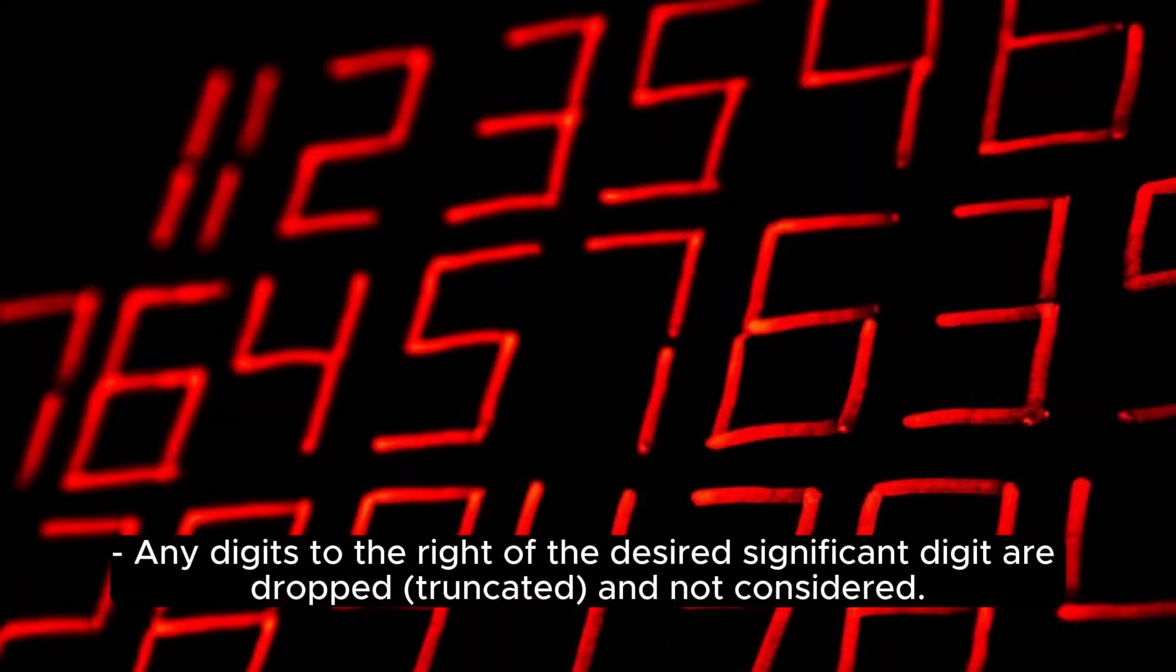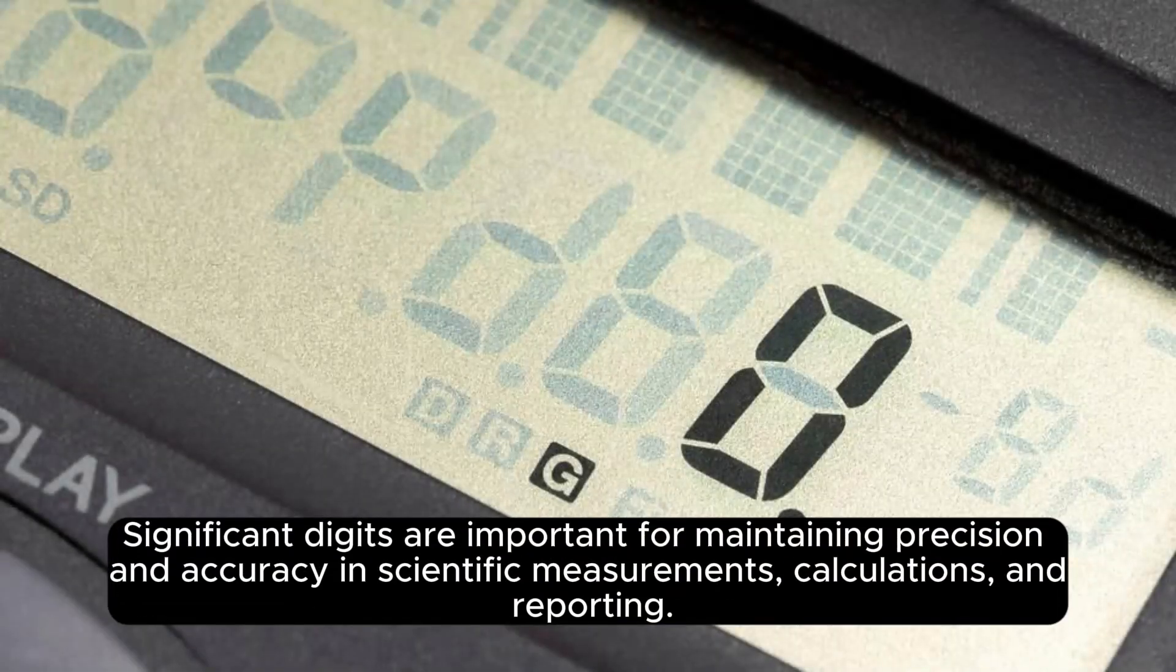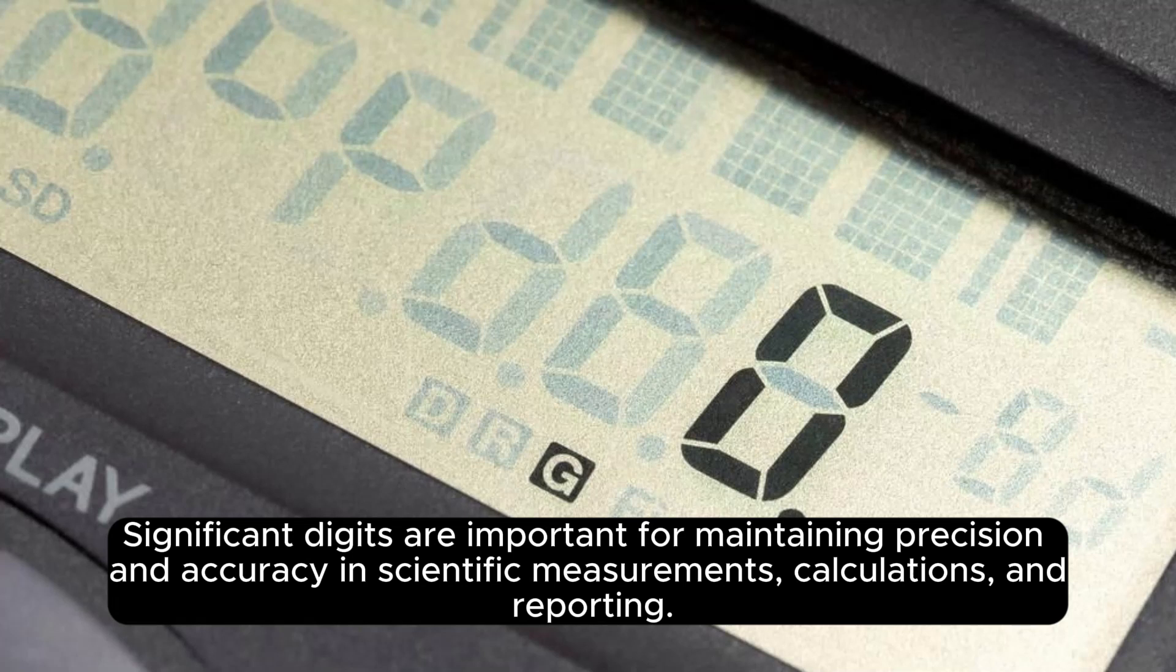Any digits to the right of the desired significant digit are dropped, truncated, and not considered. Significant digits are important for maintaining precision and accuracy in scientific measurements, calculations, and reporting.